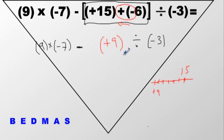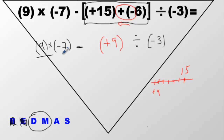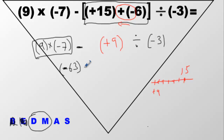We're done brackets — any more brackets? We have these brackets but they're useless, so we're done the B. Exponents: we look and see nothing. Division and multiplication, whichever comes first — in this case multiplication comes first. Put a box around it. Positive times negative is negative; 9 times 7 is 63 — put it in brackets. Drop everything else: minus positive 9, divide, negative 3.